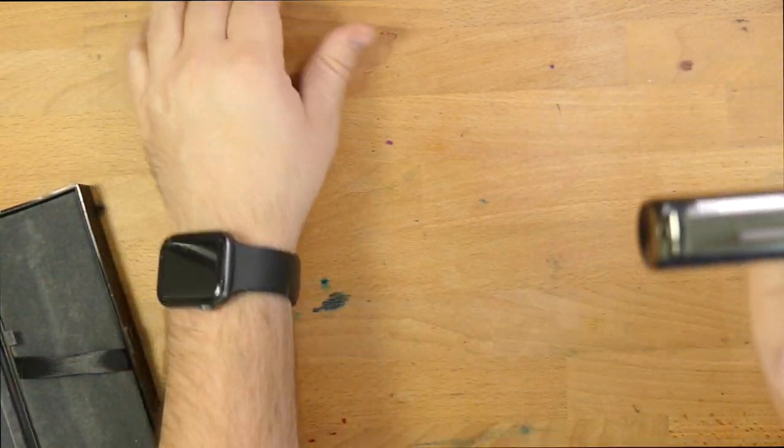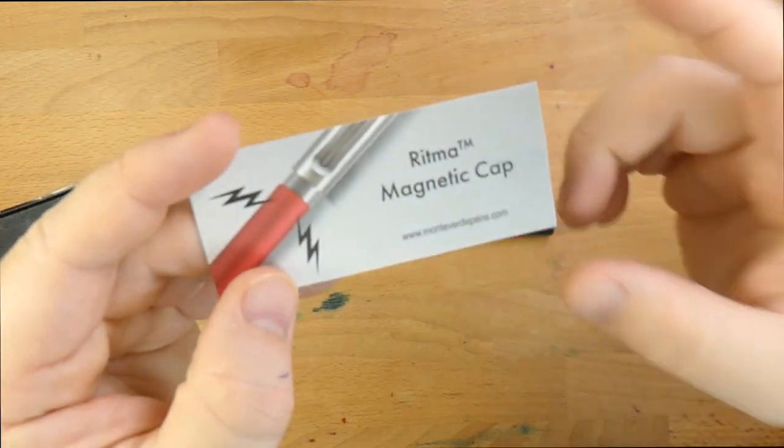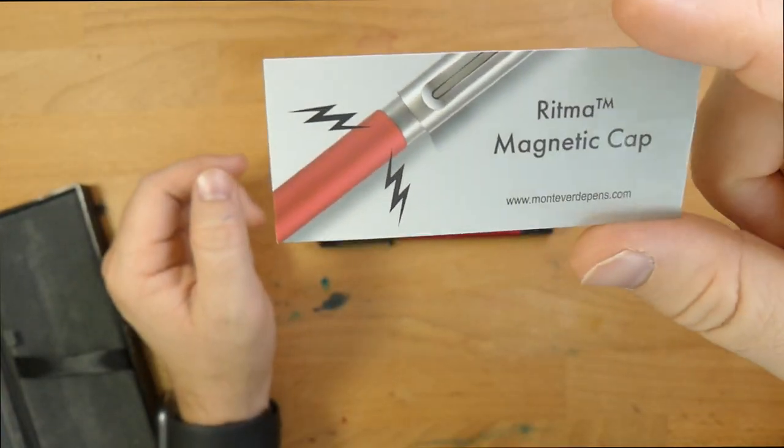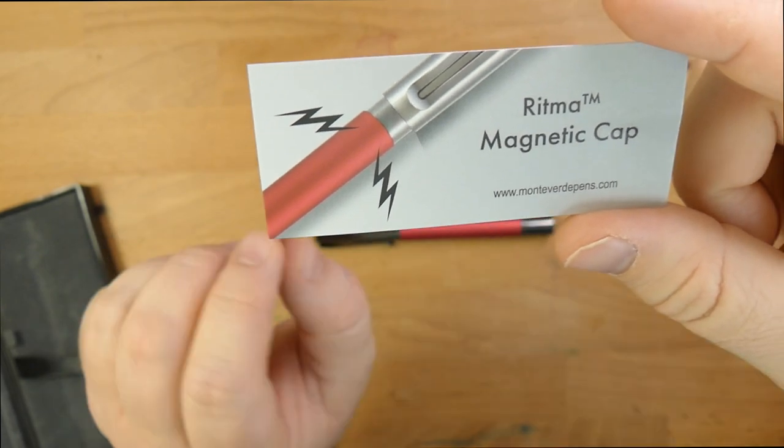Oh, what's that? It's a magnet cap. Well, here's the thing. This is the other card that comes with it. When I read this in the unboxing, it says Ritma magnetic cap, with this little illustration of a magnetic... I guess that's what magnets look like.